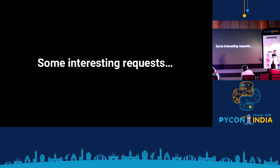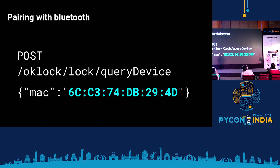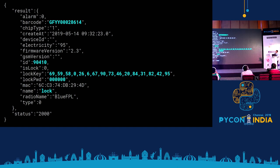Before going into the requests, we found some interesting data being sent. One in particular was a token assigned by the server to a user when they logged in — this token essentially states that this user is authenticated and can lock, unlock, bind, or unbind the lock. There are two basic pairing mechanisms. The first is via Bluetooth: while pairing, the app sent the MAC address of the lock to the server, and in response we got a large JSON dump. What was important in that dump was the barcode, the lock ID, a lock key which turned out to be the AES key, a lock password used internally while pairing, and the name of the lock itself.